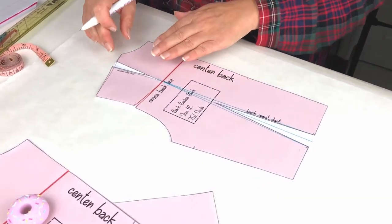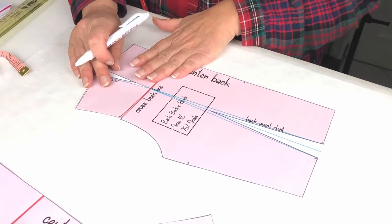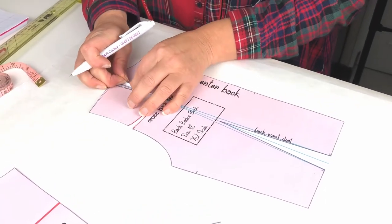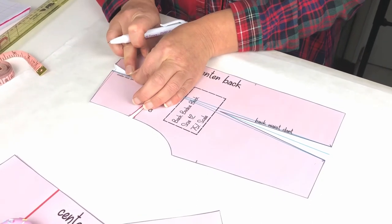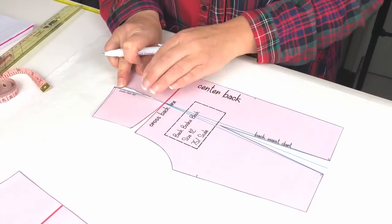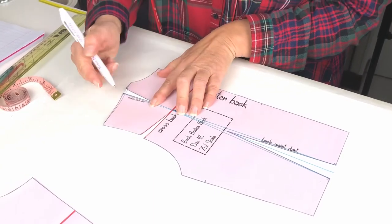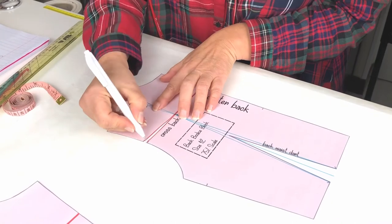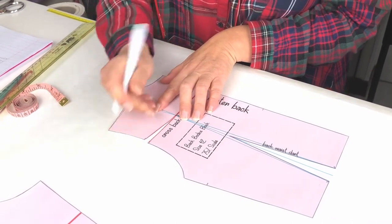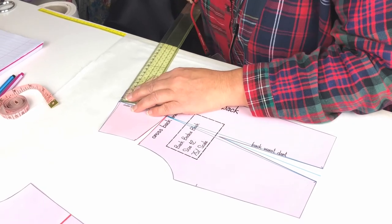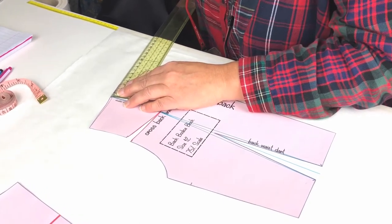So what I do is number one I pivot a fraction of the dart into the armhole so I'm just creasing it there and just tucking out a tiny bit and you can see I've tucked out barely a couple of millimeters and a fair bit does go into the armhole. I'm then going to measure how much I've got left there and I've got eight mils left.